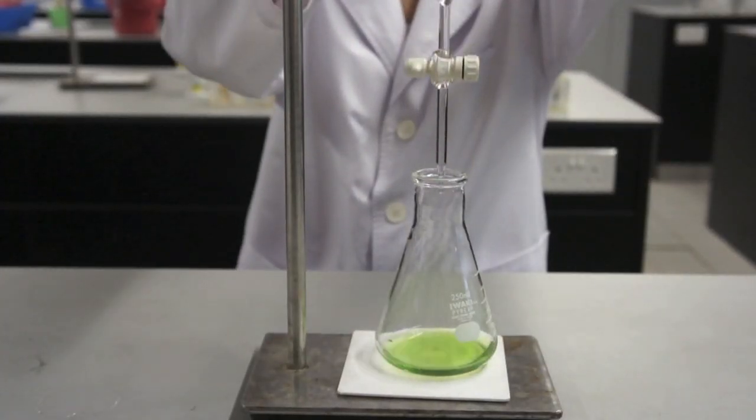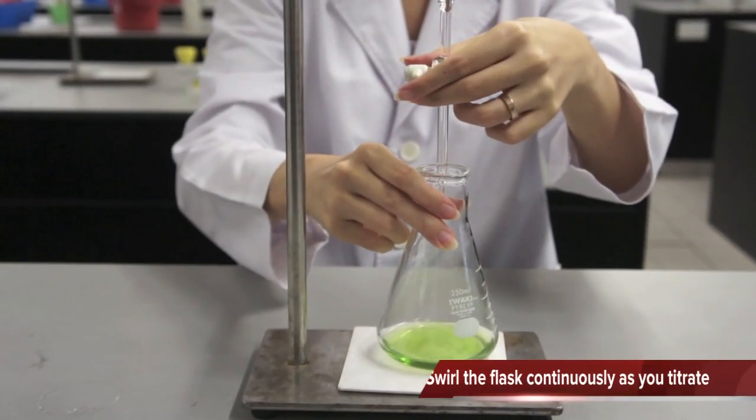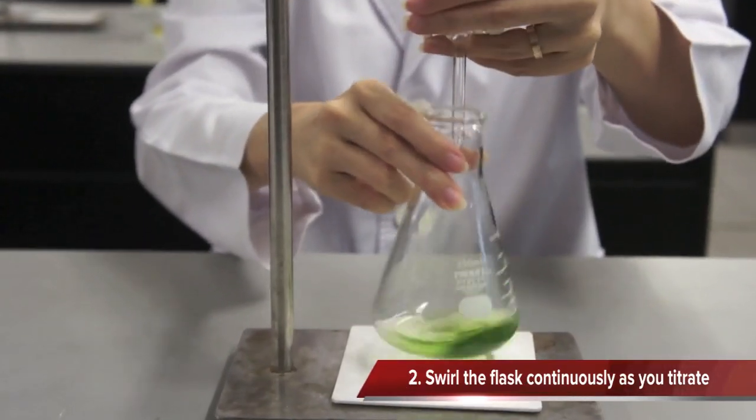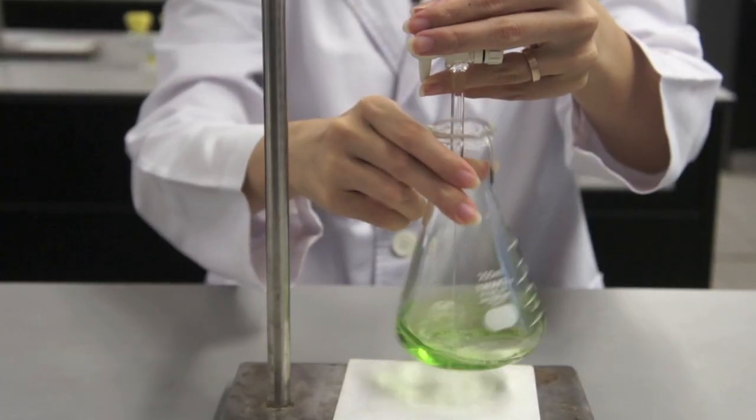Adjust the height of the burette so that the tip is inside the flask. Hold the flask in your dominant hand and use two hands to titrate, adding solution from the burette and swirling the flask simultaneously.